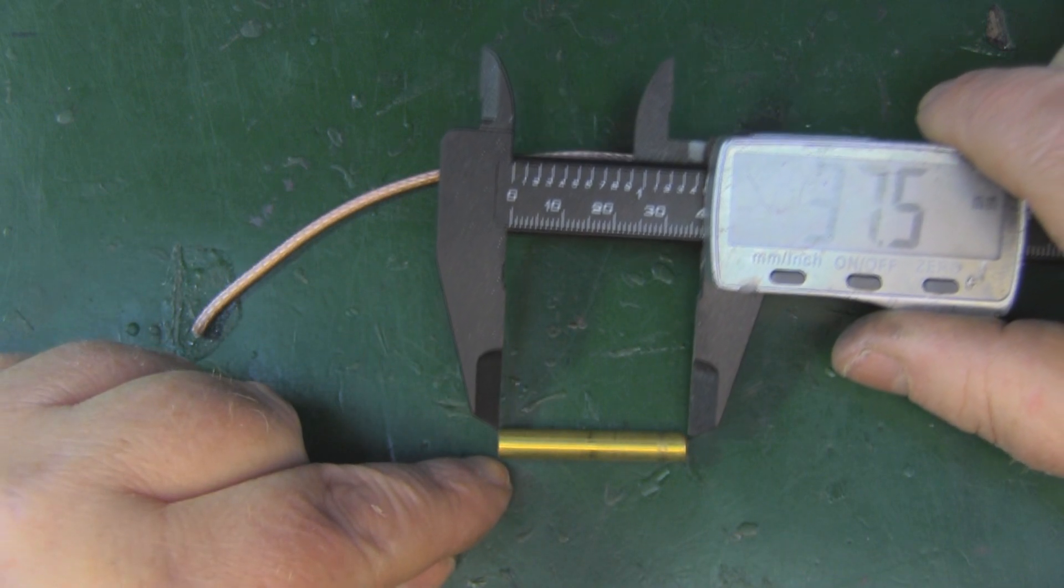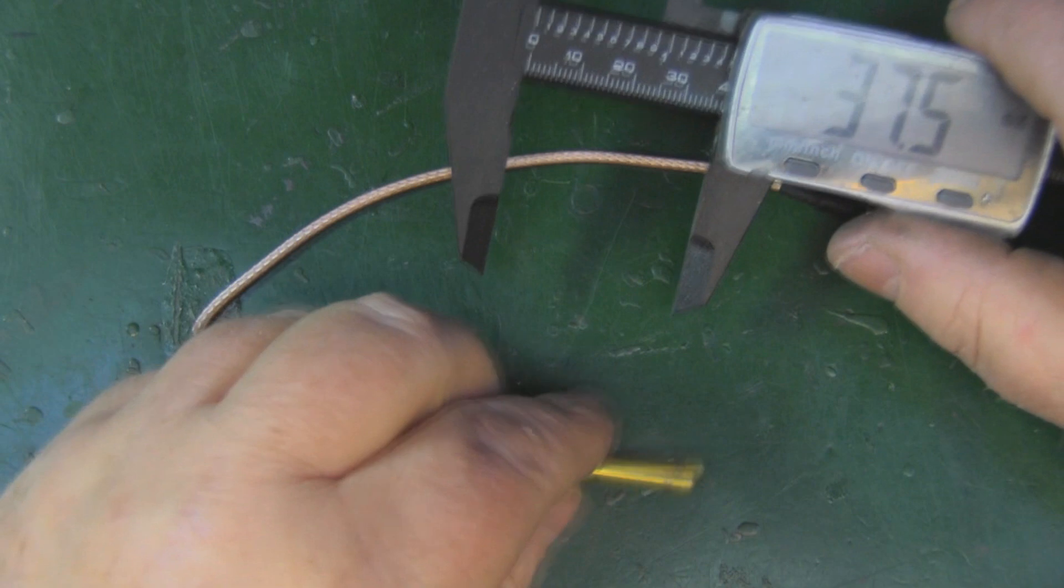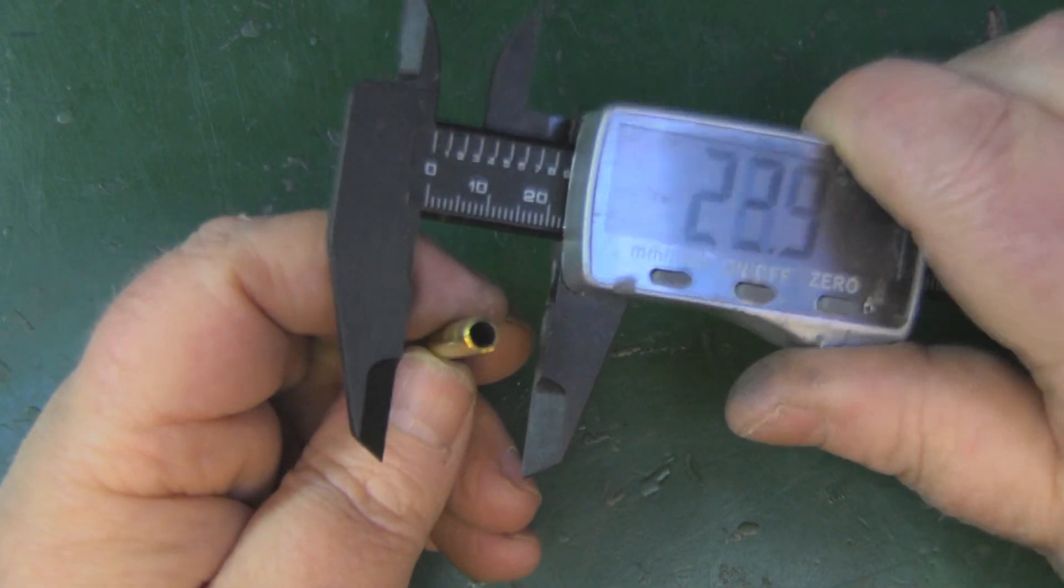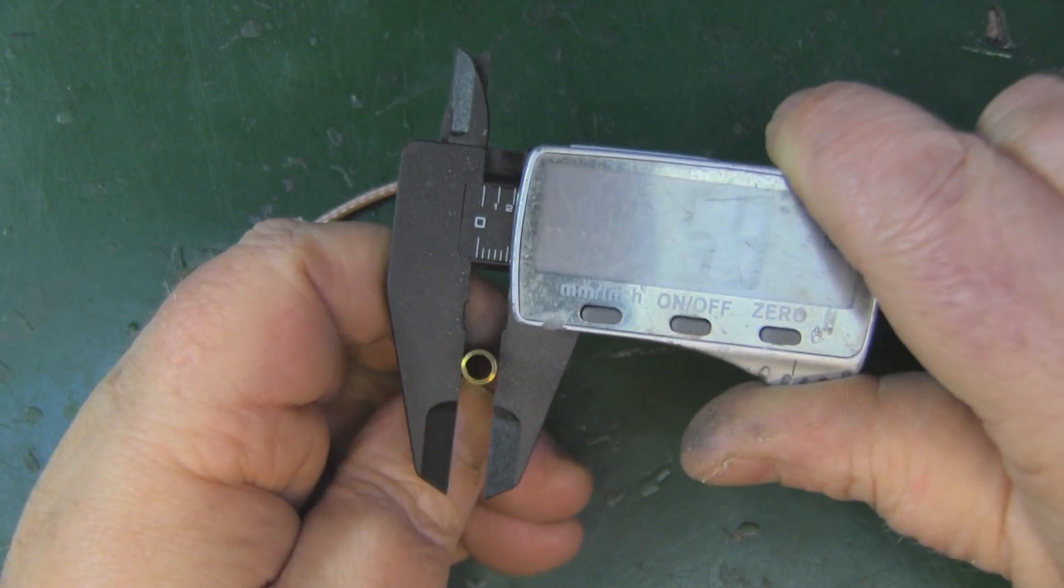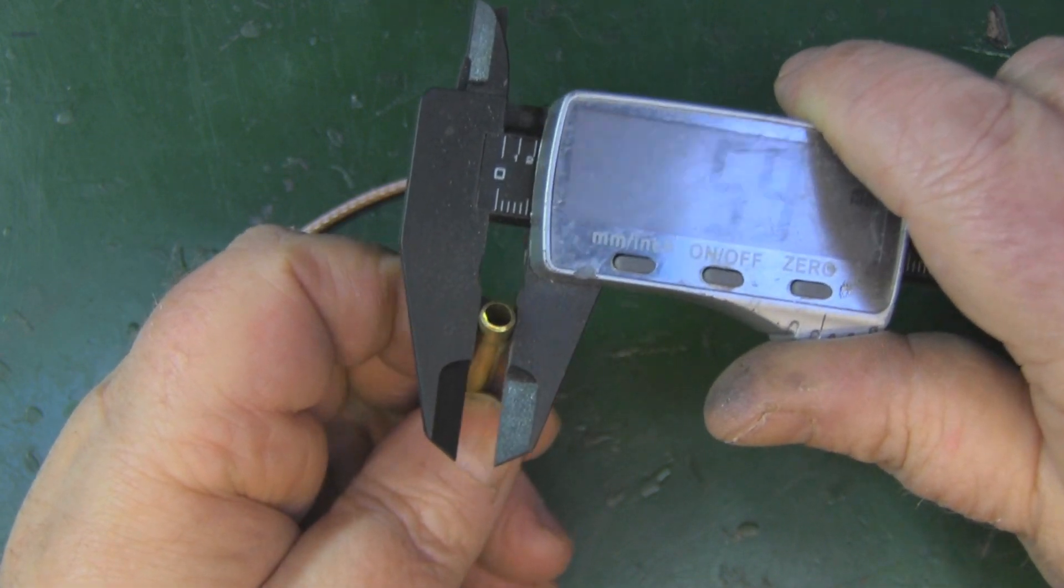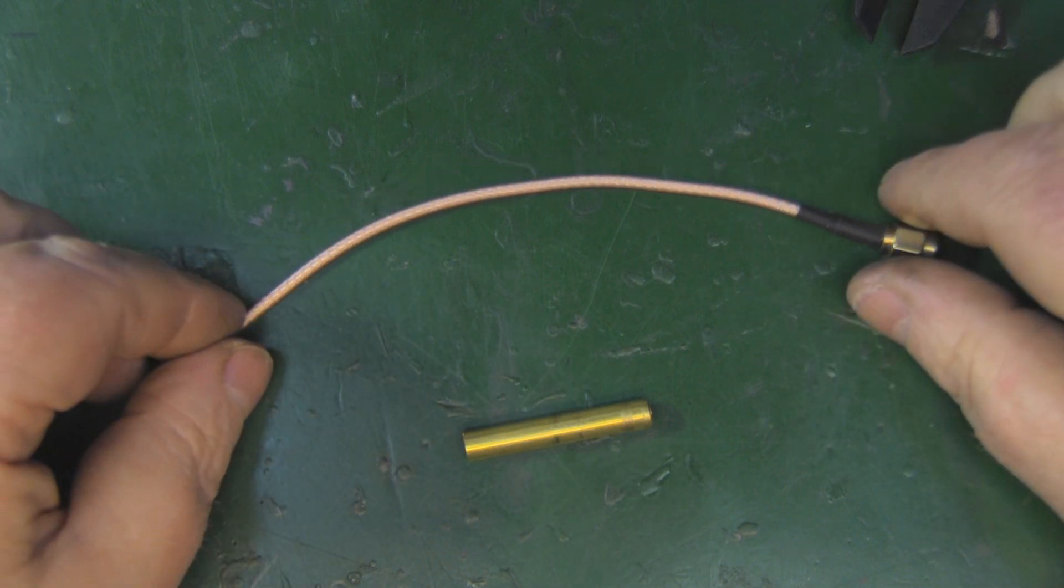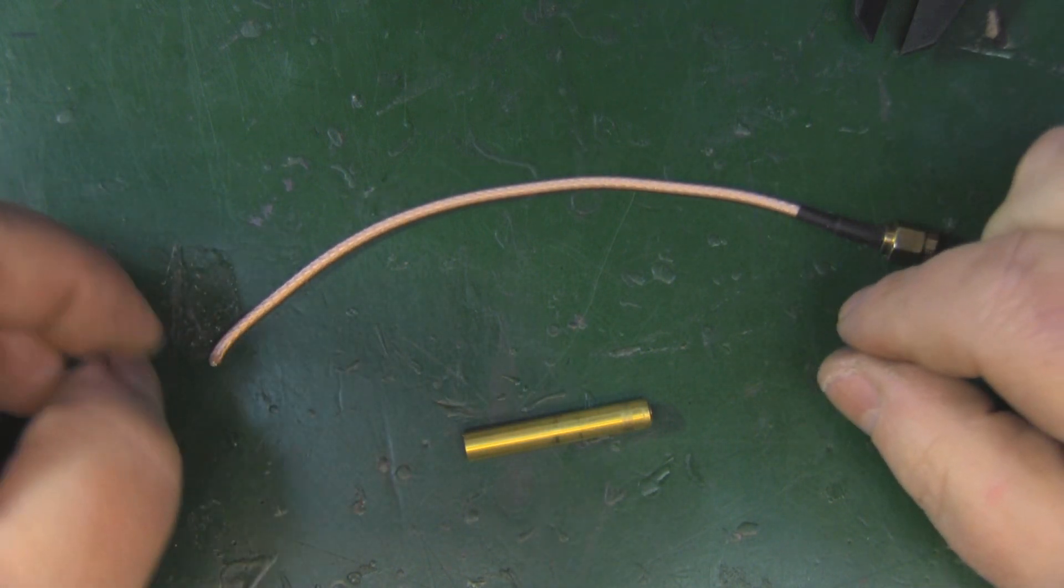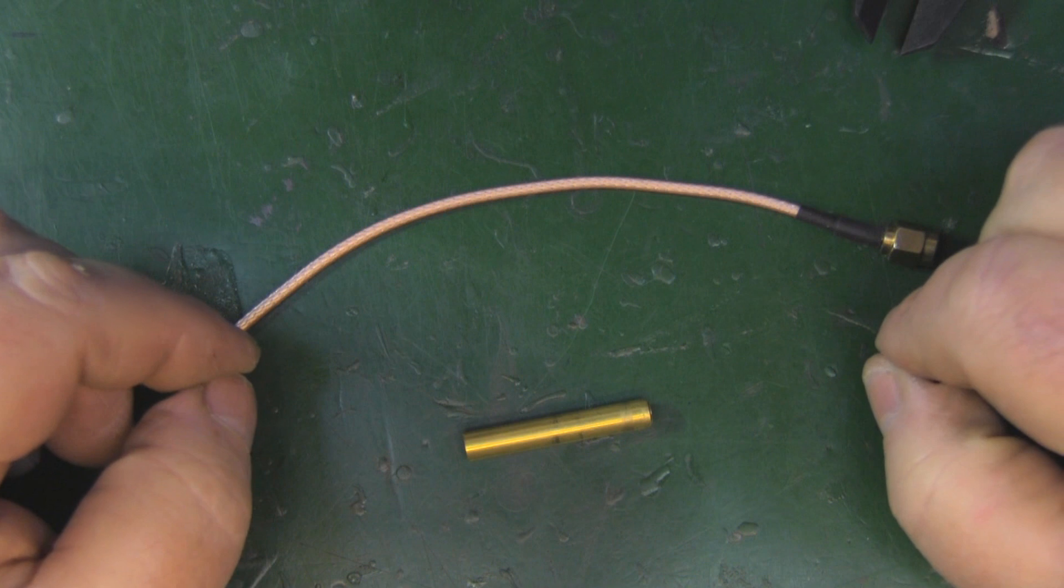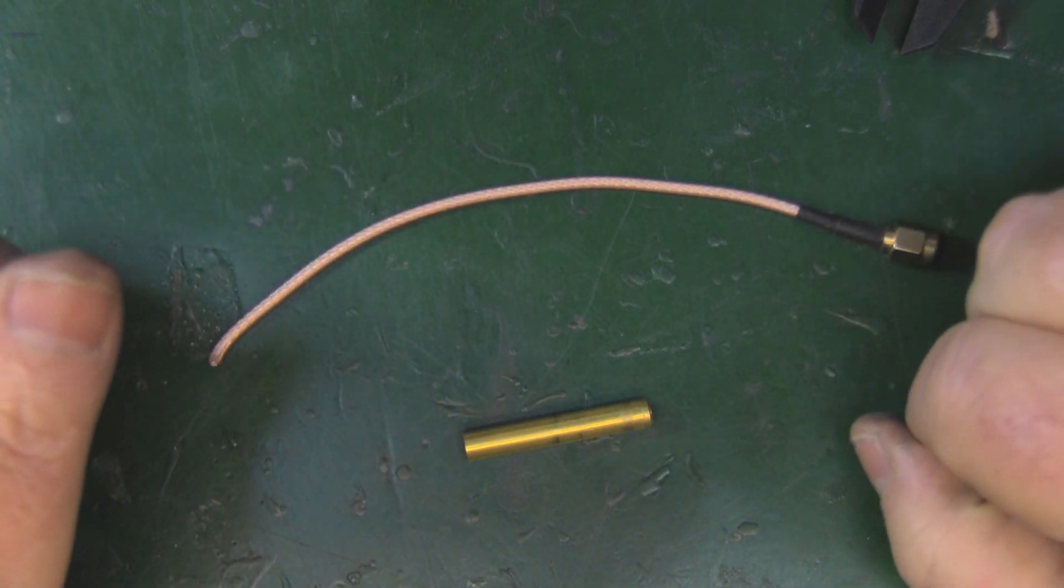So I've already cut off my length of brass tubing here to 37.5 millimeters and I'm using quite a wide diameter of tubing as well. This is six millimeters in diameter brass tubing because I'm hoping that we get a little bit more bandwidth with this antenna as well, so if you're a little bit off with your measurements you'll be in the right ballpark.